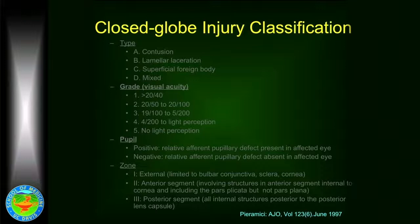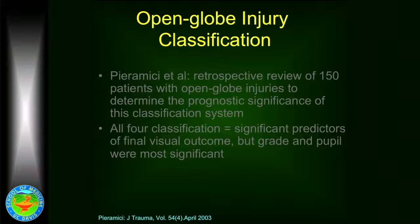Similarly, closed globe injuries can be classified in the same way. You have contusions, lamellar lacerations which do not perforate, and superficial foreign bodies. Once again, visual acuity is important, the presence or absence of an afferent pupillary defect, and the location of the injury are all important prognostic factors. In a retrospective study of 150 patients with open globe injuries, all four of those predictors were significant.